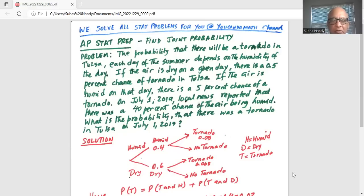So we'll draw a tree diagram. The chance of humidity on July 1, 2019 was 40% or 0.4. Therefore, the chance of the air being dry on the same day, July 1, 2019 is 1 minus 0.4 or 0.6.